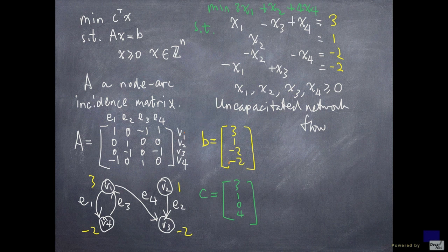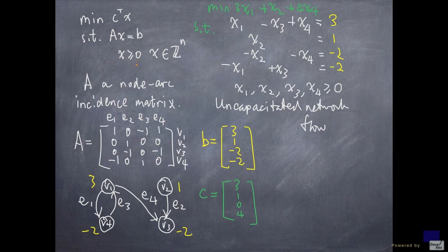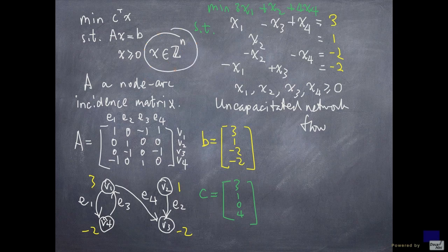But the nice thing is, if all the entries in b are integers, then we saw that since A is a totally unimodular matrix, every extreme point solution is going to have only integer entries. And so we get this condition for free. So this will come for free, as long as we solve for an optimal extreme point solution.